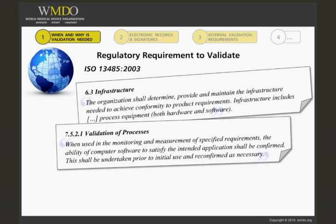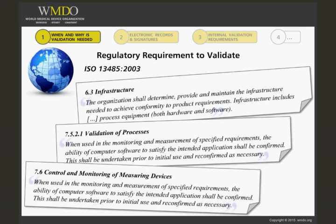Section 7.6 Control and Monitoring of Measuring Devices states that when used in the monitoring and measurement of specified requirements, the ability of computer software to satisfy the intended application shall be confirmed. This shall be undertaken prior to initial use and reconfirmed as necessary.